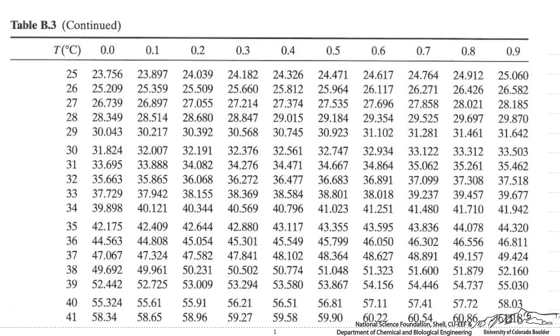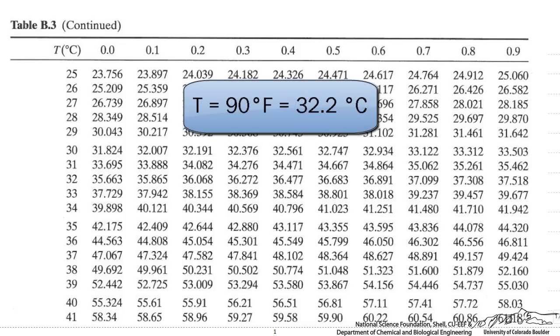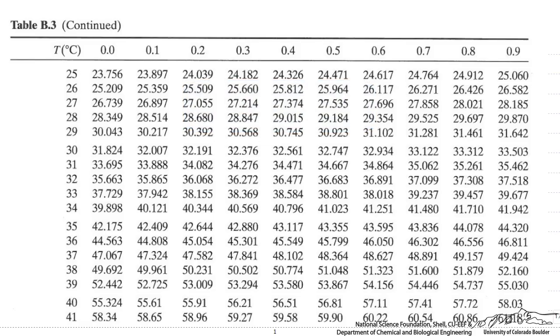And we convert our temperature into Celsius. We see that we need to find the saturation pressure at 32.2 degrees Celsius. Looking at our chart, we find 32.2, and we see that the saturation pressure is 36.068 millimeters of mercury.